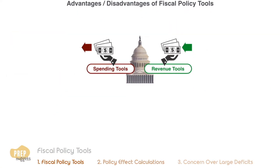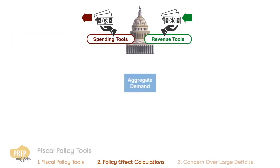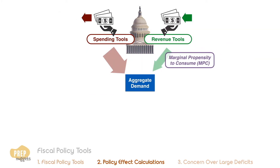It's important to note that not all fiscal policy tools affect aggregate demand equally. Spending tools are more effective in increasing aggregate demand, while tax reductions are somewhat less effective due to the marginal propensity to consume effect.